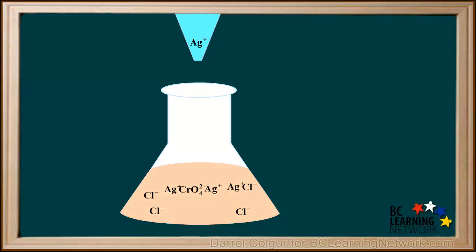But silver preferentially bonds with chloride, so as the flask is shaken, the silver ions will leave the chromate ion and bond with available chloride ions. And the reddish color will go away.